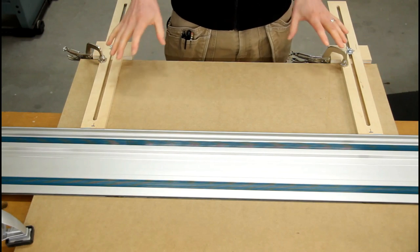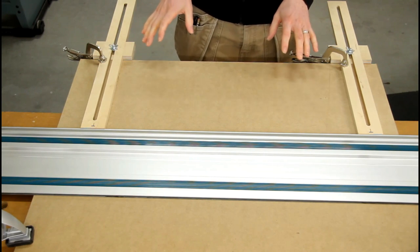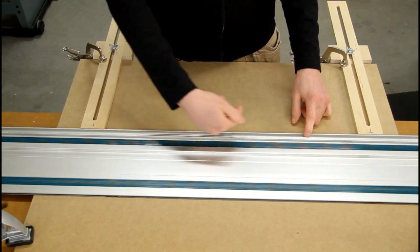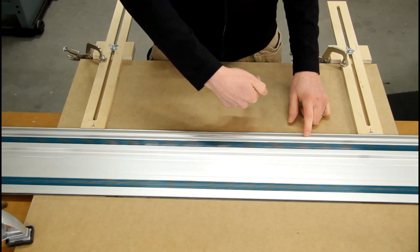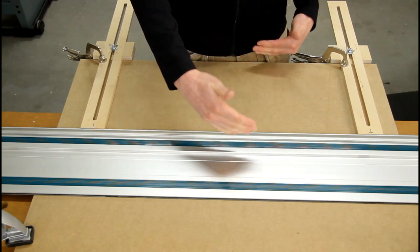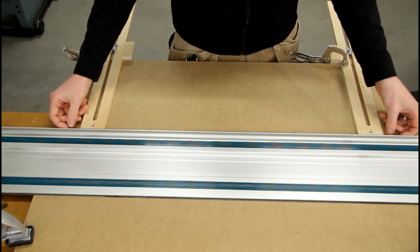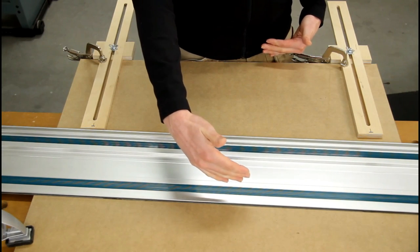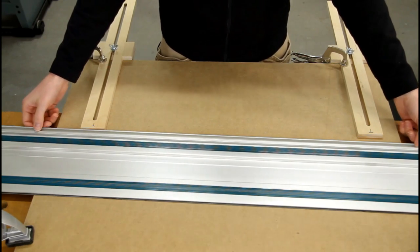Now clamping them down is an extra step, but it gives you an extra measure of security because now the track can never move this way, giving you a smaller workpiece than what you're looking for. Worst case scenario, if it ever moved or got bumped and went the other way, it's going to give you a bigger piece than what you're looking for, and you can always cut it down afterwards.